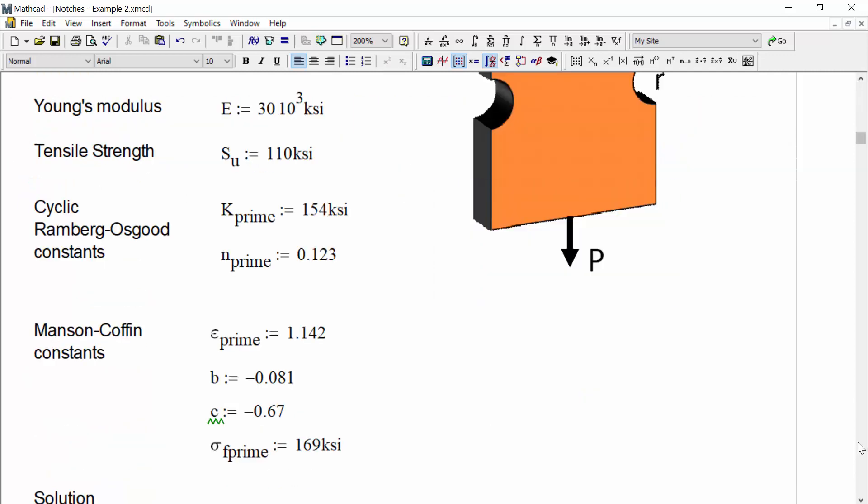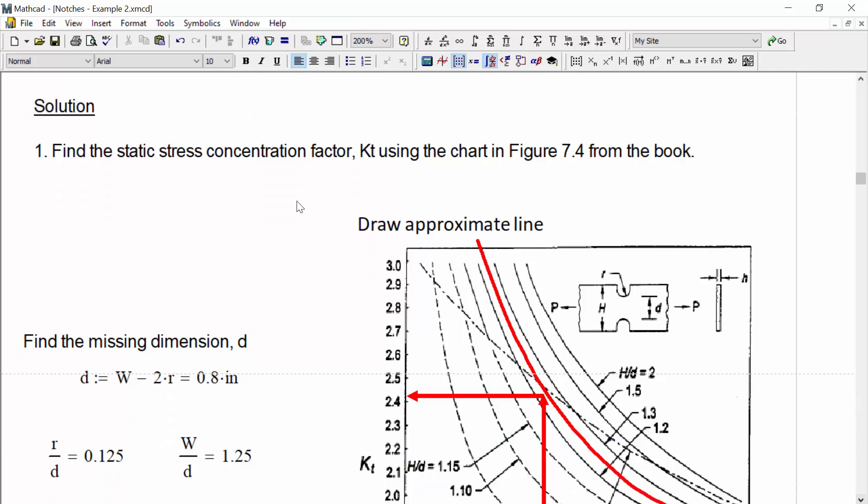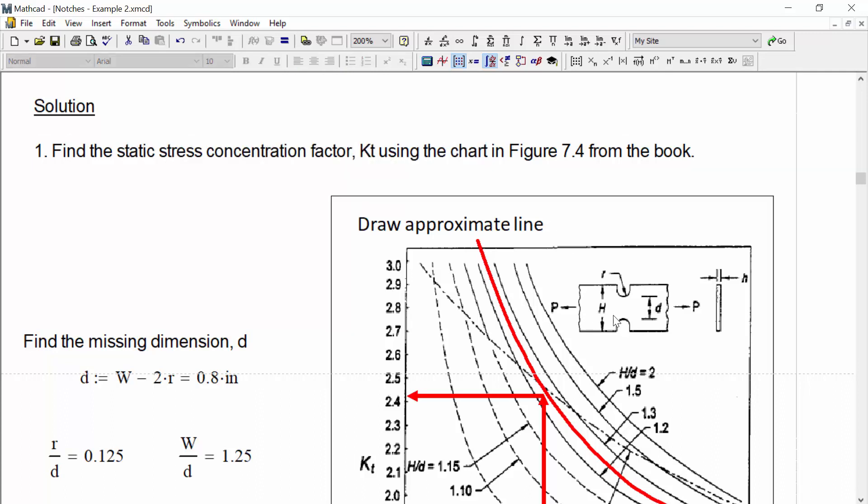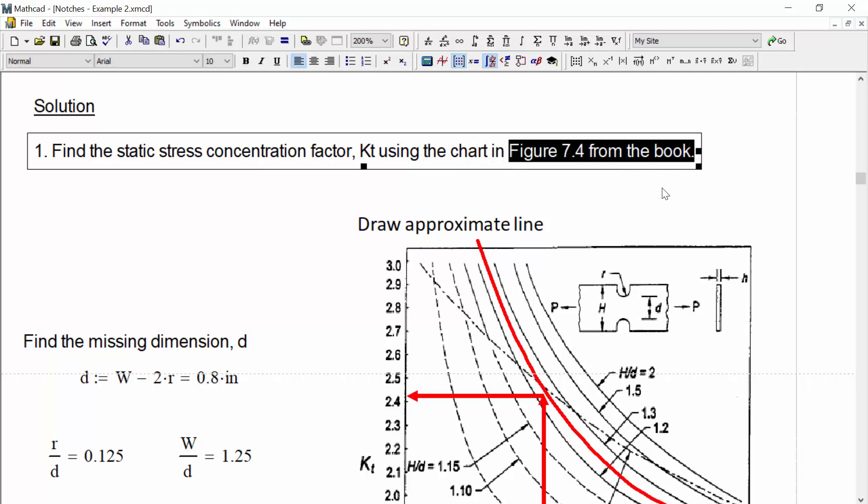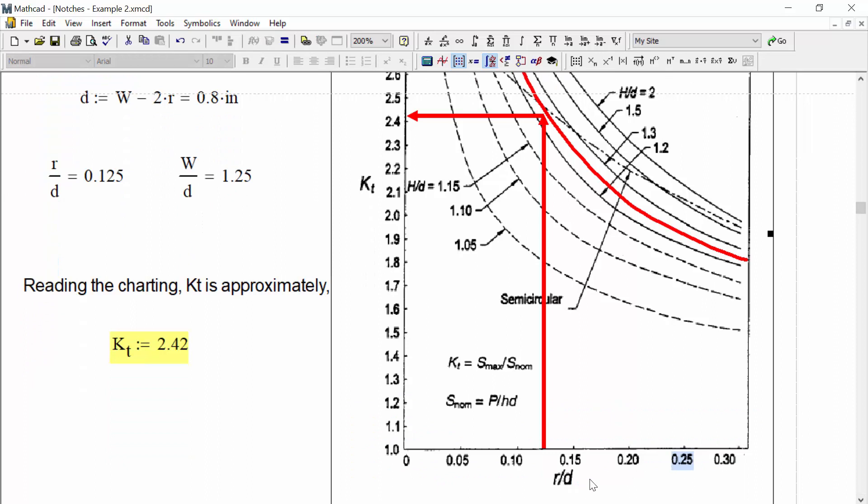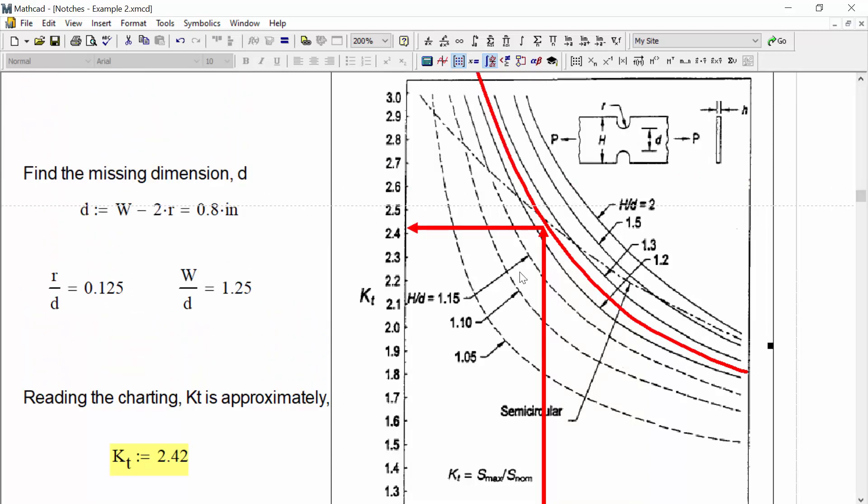So let's go ahead and get started on solving this problem by finding first the static stress concentration factor KT. We're going to find this factor using the chart that is specific to our geometry and loading condition, which happens to be figure 7.4 from the book. If we look at this chart, we can see a couple of things. We see we're given a sketch of the specimen with the dimensions labeled on it and the loading conditions placed upon it.